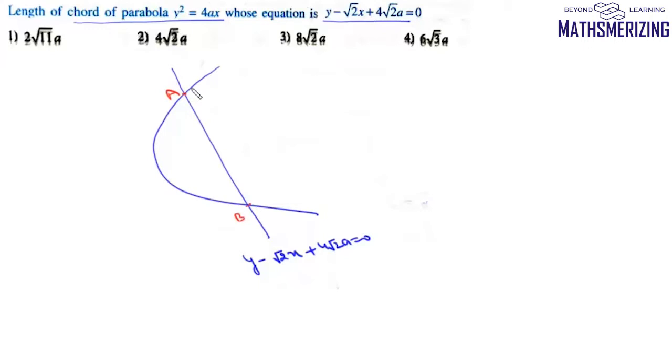Any point on this parabola can be written as (at², 2at). We will find those points on this line which are of the form (at², 2at).